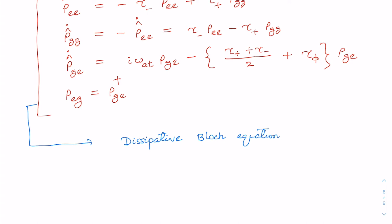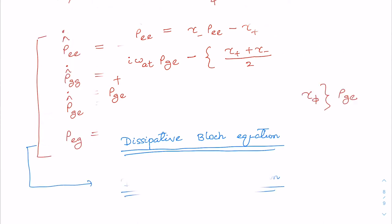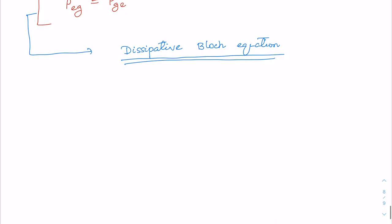The dissipative Bloch equations are capable of describing the dynamics of an artificial qubit or transmon in the presence of quantum noise. Finally, let me give a quick prescription on how to work out the decay or relaxation rates using the Fermi golden rule, which you may be familiar with from the chapter on time-dependent perturbation theory in quantum mechanics.